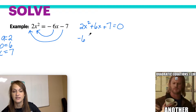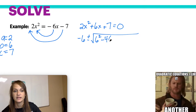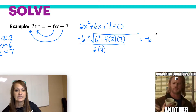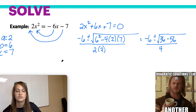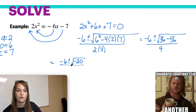So: negative b plus or minus the square root of b squared minus 4 times a times c, all over 2 times a. To clean it up: 6 squared is 36, 4 times 2 is 8, and 8 times 7 is 56, all over 4. So you'll get negative 6 plus or minus the square root of negative 20, over 4.